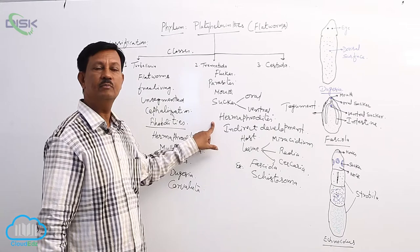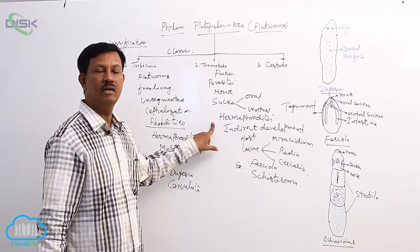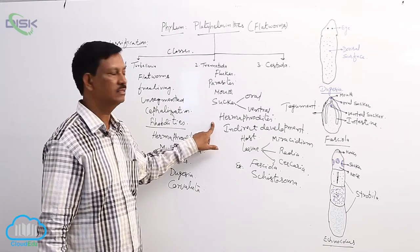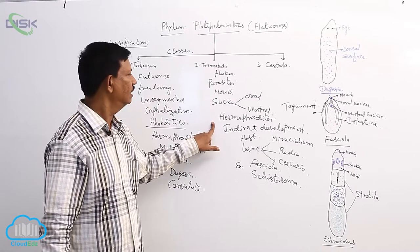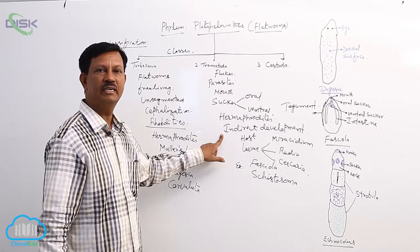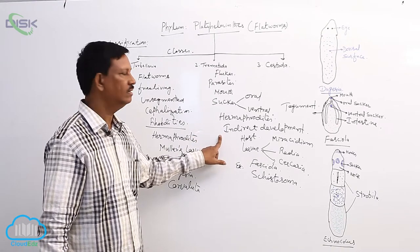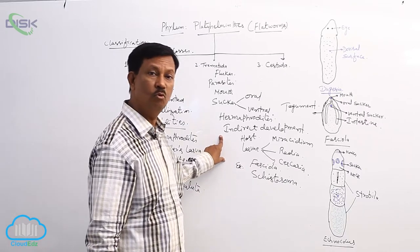These are hermaphroditic and the reproductive system is very complicated. Both male and female reproductive organs are present. They are well developed and fertilization is also internal. Development includes many larval forms and sometimes they require more hosts also.